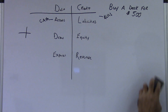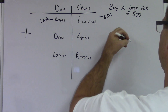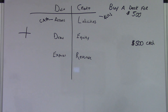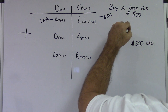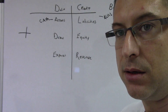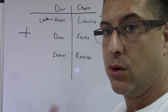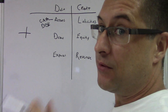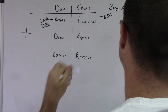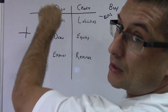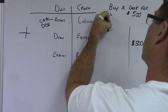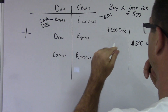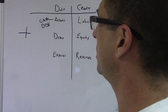I'm going to put the dollar amount first — that's going to be our credit. Now, what are we getting? We're buying a desk, so we're getting an asset. We're going to debit the asset, so that's going to be desk $500 on the debit side.